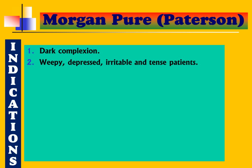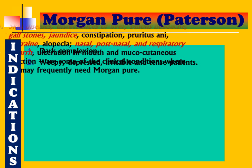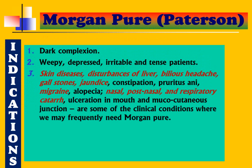Morgan Pure Patterson features dark complexion and weepy, depressed, irritable, and tense patients. Important features include skin disease, disturbances of liver, bilious headache, gallstone, and jaundice. Common features with the earlier Morgan include constipation, pruritus, migraine, alopecia, nasal, post-nasal and respiratory catarrh. Ulceration in the mouth or mucocutaneous junction are clinical conditions that frequently call for Morgan Pure.